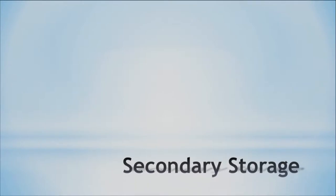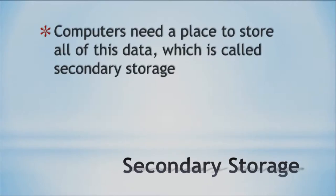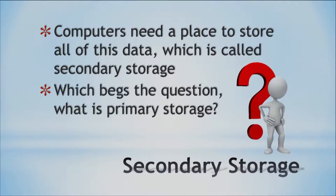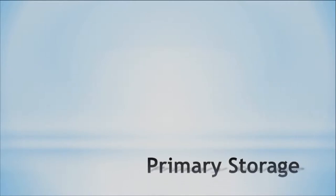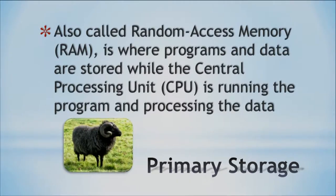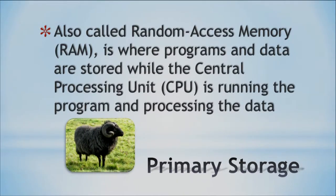So computer scientists were trying to think about what to do with storage. We got all this data, so we have something called secondary storage to store all these different files. And now you're probably wondering — well, what's the primary storage? Primary storage has a fancy name: random access memory, and our three-letter acronym for today is RAM — random access memory.